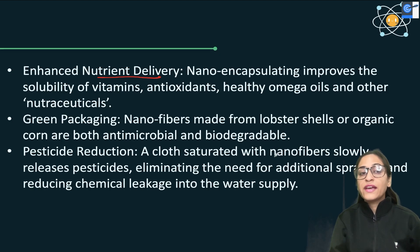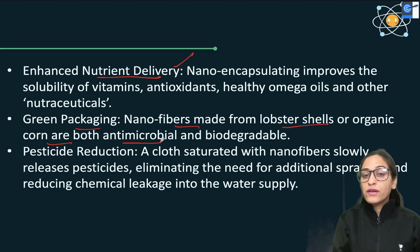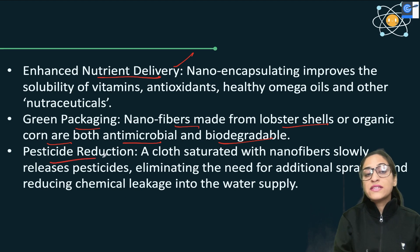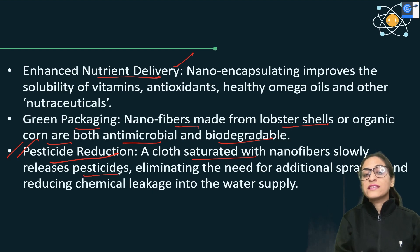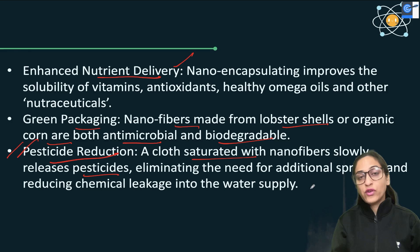Nanotechnology also improves food storage — keeping oxygen-sensitive foods much fresher. It helps in nutrient delivery if vitamins and antioxidants in nano-encapsules are used, which is very good for nutrient delivery. Green packaging using nanofibers from lobster shells or organic corn is both antimicrobial and biodegradable. Pesticide reduction is another use — a cloth saturated with nanofibers slowly releases pesticides, reducing the need for additional spraying and avoiding contamination and water pollution.